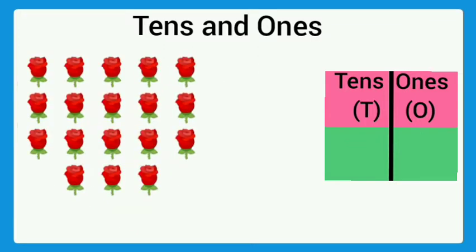Here are some flowers. Let's count how many ones and how many tens are here. 1, 2, 3, 4, 5, 6, 7, 8, 9, 10.